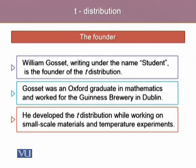Since he was not allowed to use his name in any publication, he used the name Student. And since then, this distribution is known as Student's T-distribution.